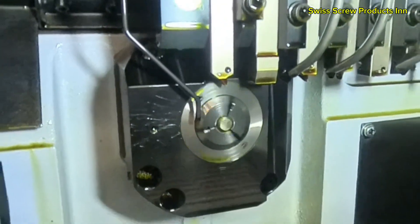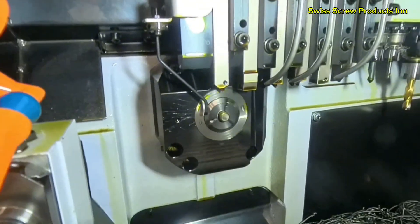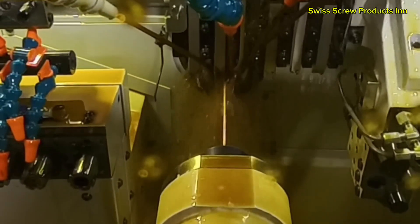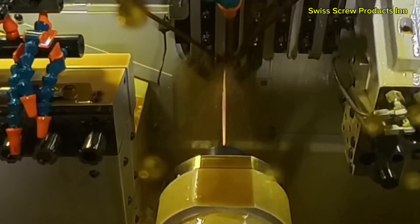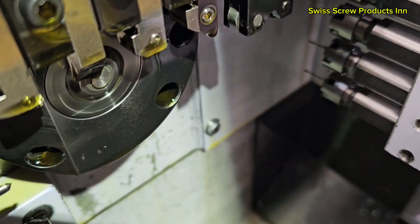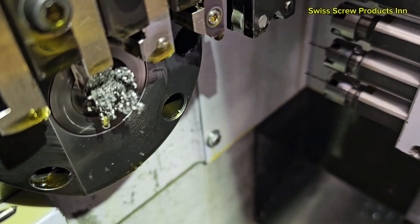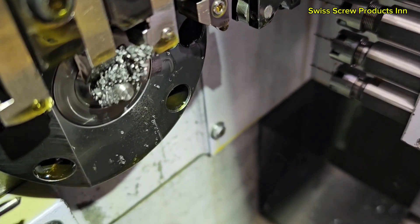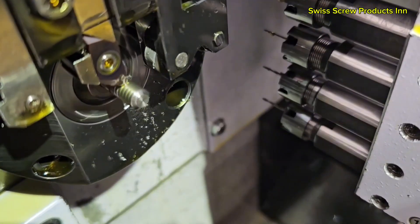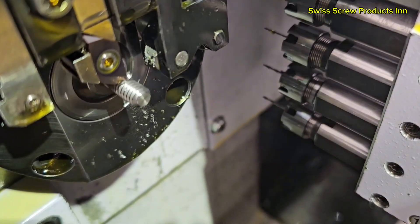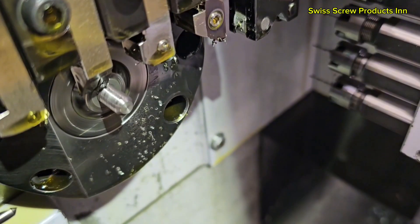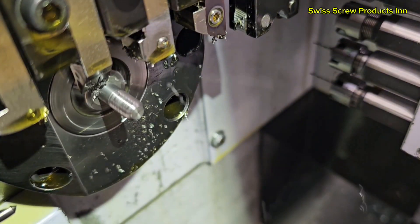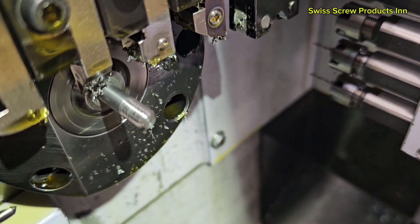This design significantly reduces vibration and allows the machine to cut long, slender parts with high stability and tight tolerances. Next, we have the cutting tools, mounted on gang slides or turrets. These tools stay in place while the material moves, enabling multiple operations—turning, grooving, drilling, or even threading—all performed in sequence or simultaneously.